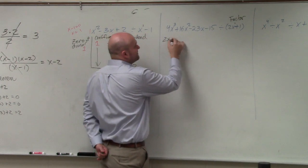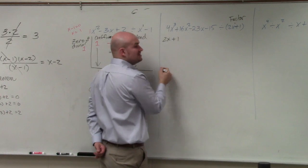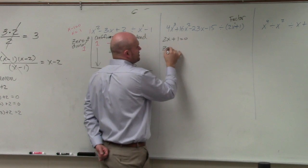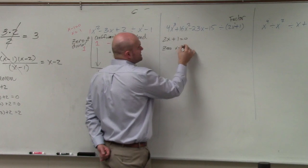So first thing I always like to do is find the zero. So I'd say 2x plus 1 equals 0. Therefore, the zero is x equals negative 1 half.